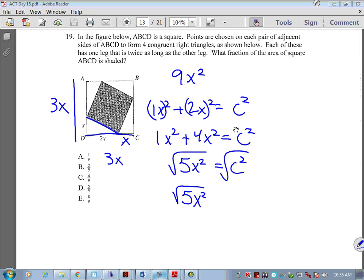So that's the length of one side, is square root of 5x squared. In order to find the area, I'm going to multiply that by square root of 5x squared, and what that's going to give me is 5x squared. So if we're asking for what fraction of the area of the square is shaded, that comes out as 5x squared over 9x squared. These x squareds are going to cancel out, leaving me with an answer of 5 ninths. Does that help you out a little bit?